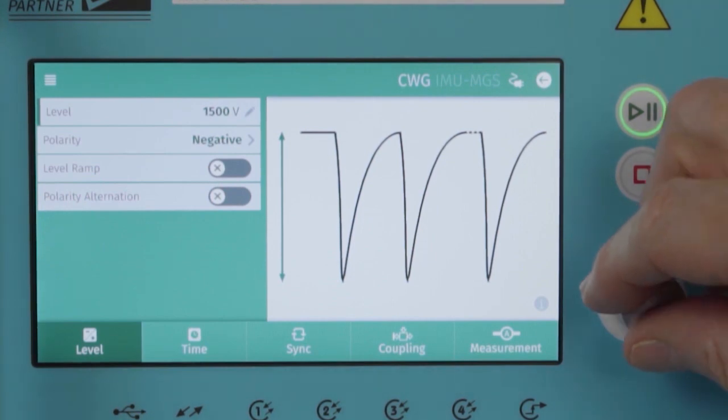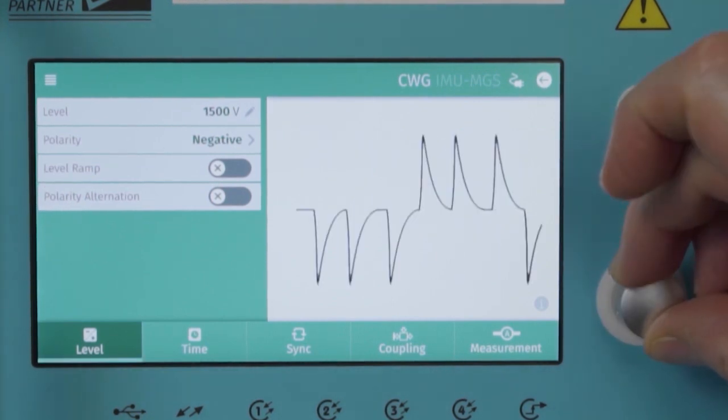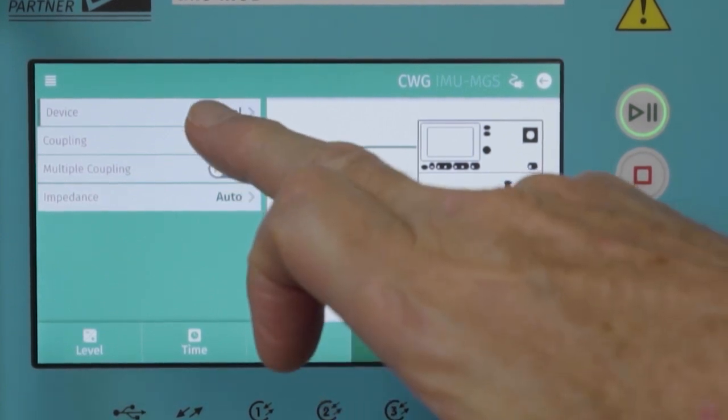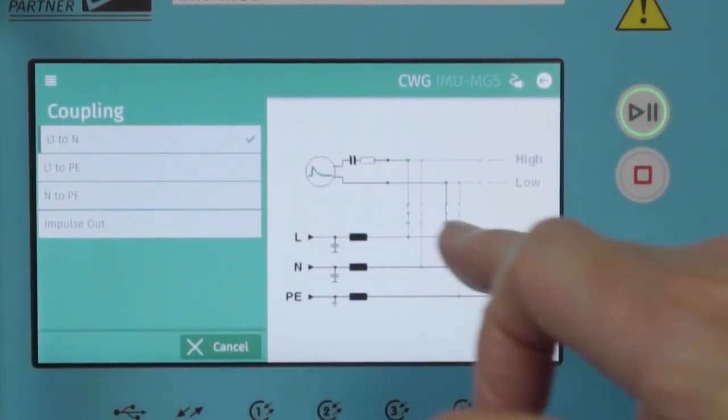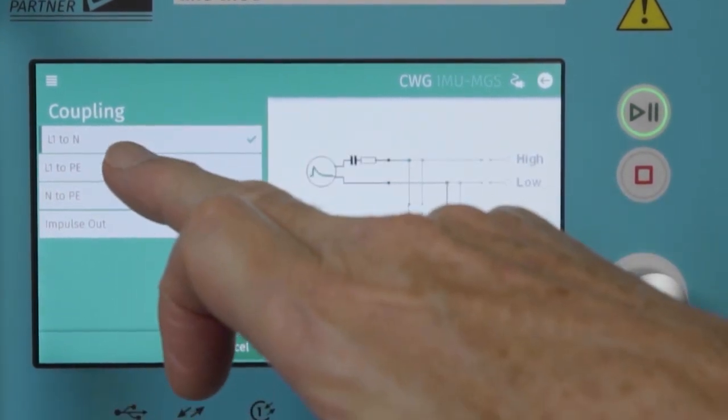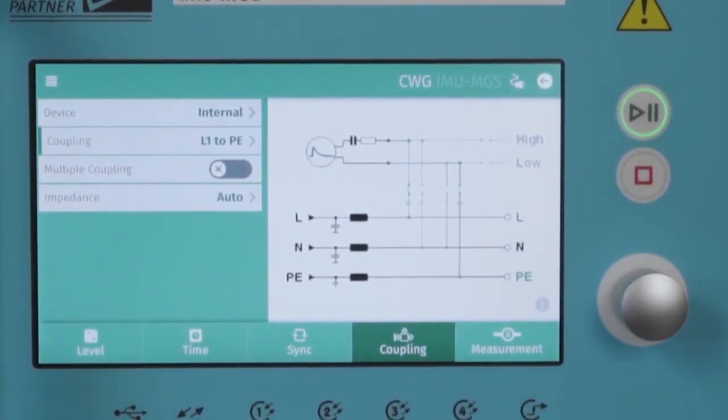It's also possible to set the coupling level. We see on the graphic display the coupling path selection. When we change, it changes as a help.